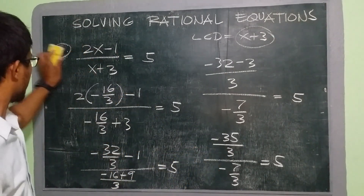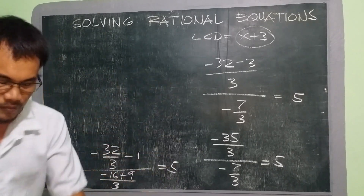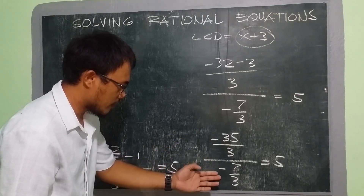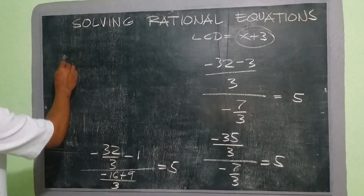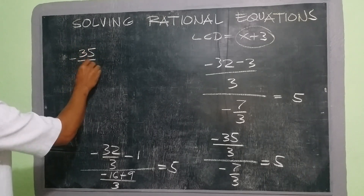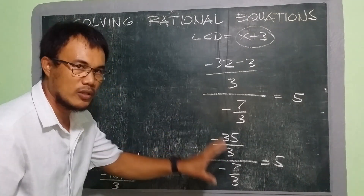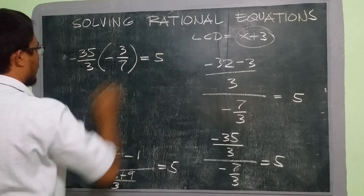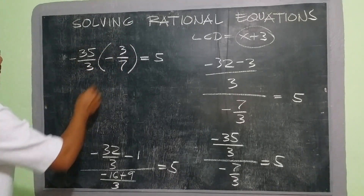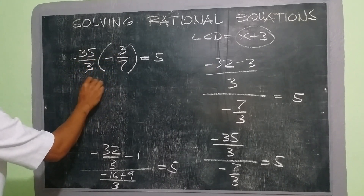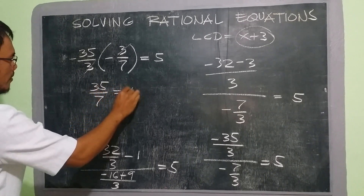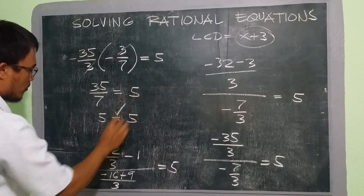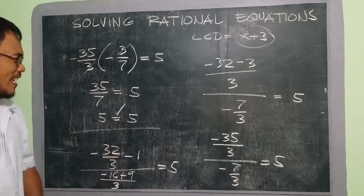We're almost done. Remember: negative divided by negative. Since negative 35 over 3 divided by negative 7 over 3 — both are negative so the result will be positive. In dividing fractions, we take the reciprocal and proceed to multiplication: negative 35 over 3 multiplied by negative 3 over 7 equals 5. Negative times negative is positive. We cancel out 3 and 3, giving us 35 over 7 equals 5. And 35 divided by 7 is 5. Therefore, our answer is correct. Thank you for watching.